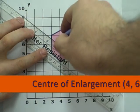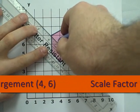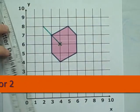For our final example, the center of enlargement is inside the shape. The scale factor is 2. The center of enlargement is at 4, 6.